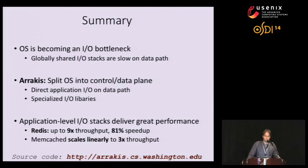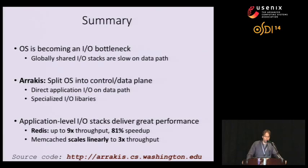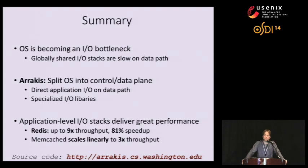To summarize: the operating system is becoming an I/O bottleneck, in particular for server applications. The main reason is that globally shared I/O stacks such as Linux's are very heavyweight when directly on the data path. In Arrakis, we eliminate this overhead by splitting the OS into a control plane and a data plane, enabling direct application-level I/O and specialized I/O libraries. These deliver great performance: up to 9x throughput improvement for Redis, an 81% speedup in latency, and Memcached scaling linearly to 3x Linux's throughput at line rate. The Arrakis source code is available at arrakis.cs.washington.edu.